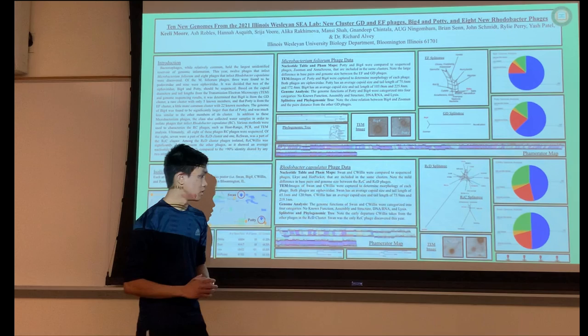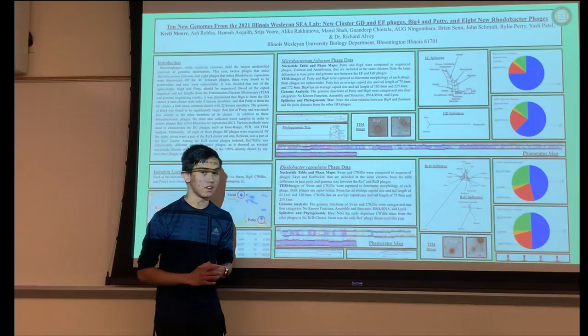Split tree and phylogenetic tree analysis noted that RC Caerulius diverges from the other phages, because even though it belongs to the RCD cluster, it's a bit different than the other phages in the RCD cluster.